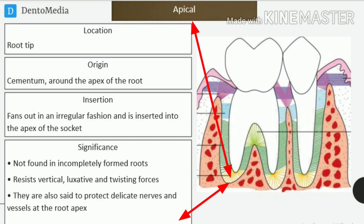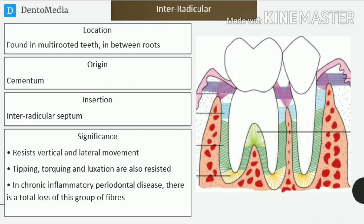Apical fibers. Location: root tip. Origin: cementum, around the apex of the root. Insertion: fans out in an irregular fashion and is inserted into the apex of the socket. Significance: not found in incompletely formed roots; resists vertical, luxative and twisting forces. They are also said to protect delicate nerves and vessels at the root apex.